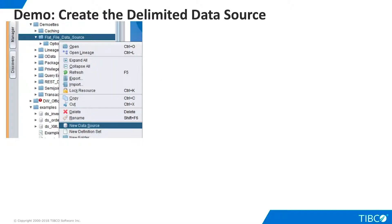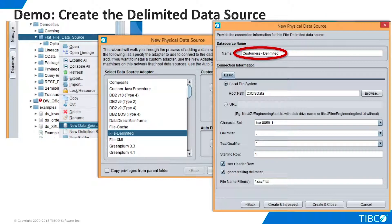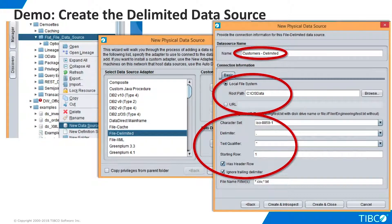We are ready to begin our demo. We right-click the Studio namespace and select New Data Source. From there, we select the File Delimited Data Source. We name the new data source and specify the directory or URL where it resides. Next, we specify the formatting details of our flat file. Note that our file has a header row, which will be used to define the column names, so we check the Has Header Row box.